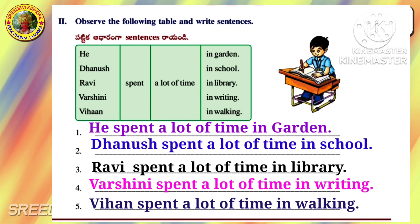Write the plural forms of the following words. First one: Day, Days. Second one: Parent, Parents. Third one: Seed, Seeds. Fourth one: Goat, Goats. Fifth one: Sprout, Sprouts.